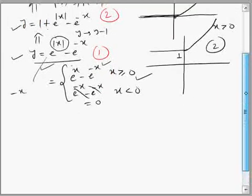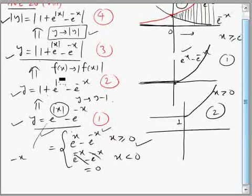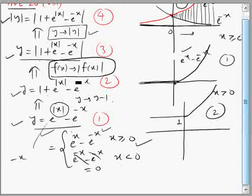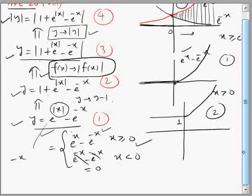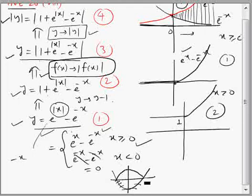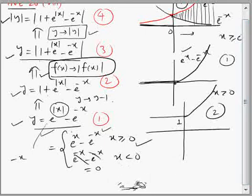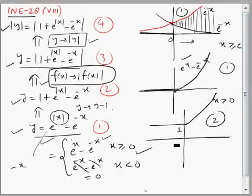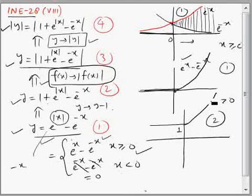From the second to the third graph, we take |f(x)|. The graphical transformation for this means: whatever lies below the x-axis, we take its reflection above the x-axis and remove the original. But in the second graph there is nothing below the x-axis, so the graph of the second and third functions are the same.